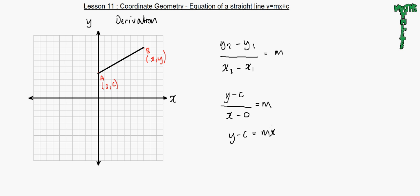If you wanted, you could have put brackets and x minus 0, but then m times 0 would just be 0. So y minus c equals mx. And finally, adding a c to both sides, y equals mx plus c.